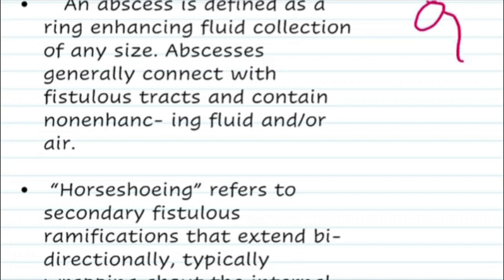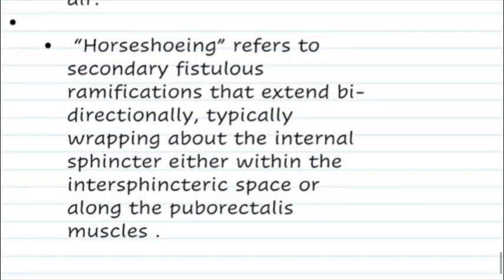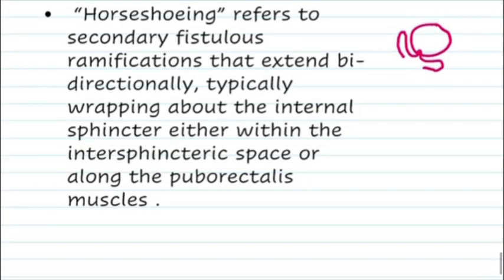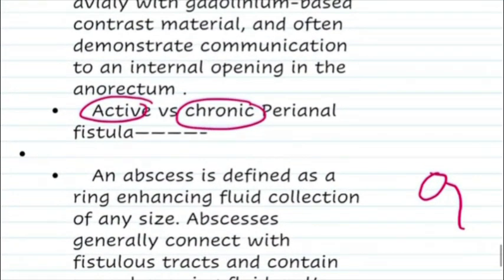Horseshoe refers to secondary fistula ramification that extends bi-directionally on both sides of the internal opening. It can be within the intersphincteric space or along the puborectalis muscle. This is referred to as horseshoeing of the abscess.